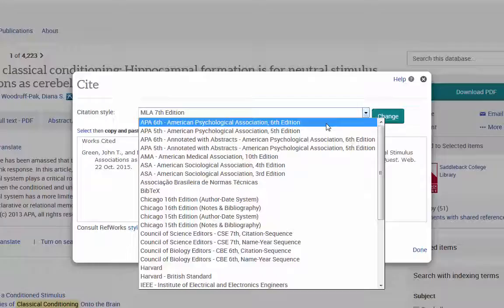And for a reference list, you should not choose the annotated with abstracts version as that will include too much information. For a reference list, you will choose APA 6th edition and then click Change.